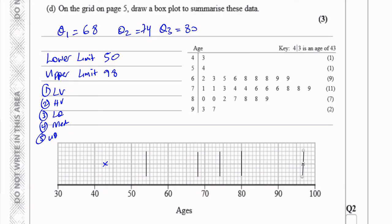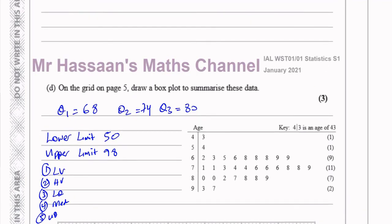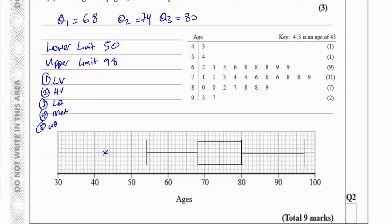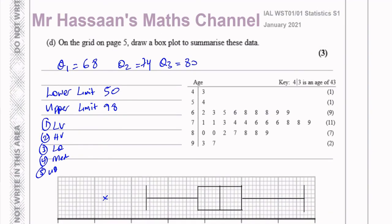I draw a box from the lower quartile to the upper quartile — that's the interquartile range — and then the whiskers join the lowest value within range to the lower quartile, and the upper quartile to the highest value. Importantly, you do not join the whisker to the outlier; the whisker stops at 54 on the lower end. This question only asks for the box plot — there's no requirement to analyze spread, skewness, or symmetry.